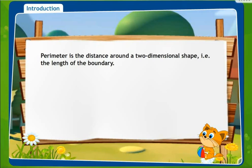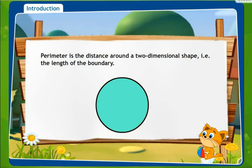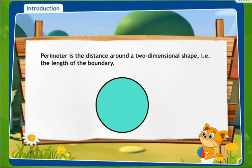A closed figure is basically a two dimensional figure. So what is a perimeter? Perimeter is the distance around a two dimensional shape — that is, the length of the boundary. As you have seen in the circle, the boundary of the circle is basically the circumference.